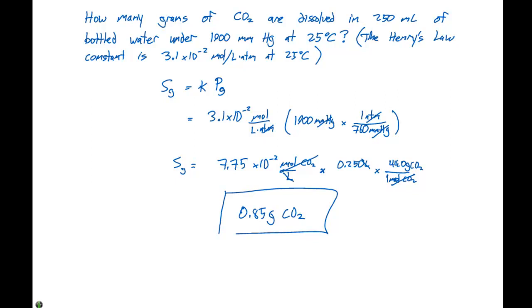So here we set up this problem. The equation's pretty straightforward, where the solubility is K times the pressure. We go through and we determine our concentration. Our concentration units are in molarity, which we've seen back in chapter four. We have moles per liter, we multiply by our given volume, and then we multiply by the molecular weight of CO2. And that gives us 0.85 grams of CO2.